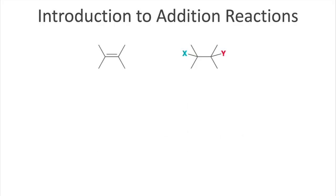This group of reactions is characterized by the addition of the X and the Y group across the double bond. In this process, a pi bond is broken and converted into two new sigma bonds — one connected to X, the other connected to Y. In this and subsequent videos, we will look at many addition reactions and classify them by what X and Y are being added.